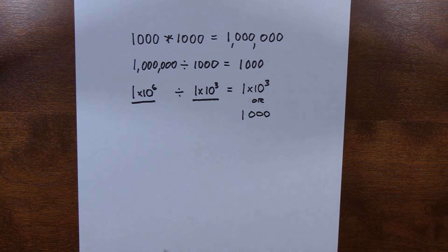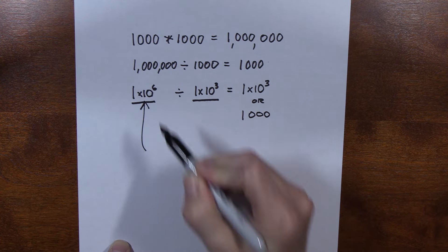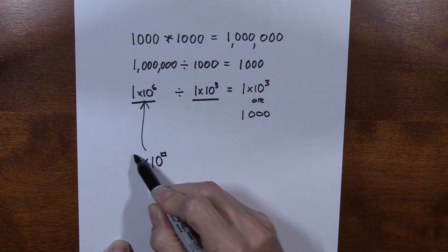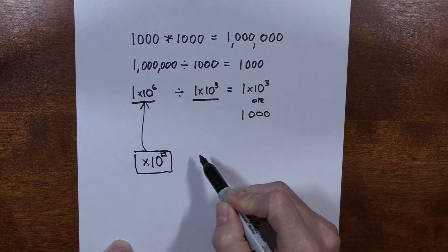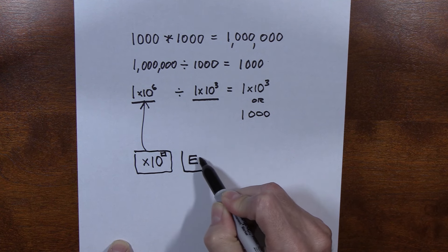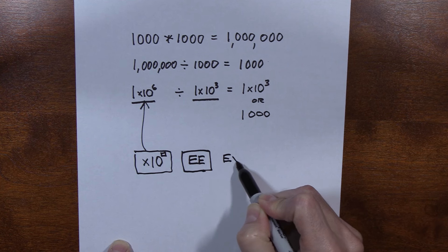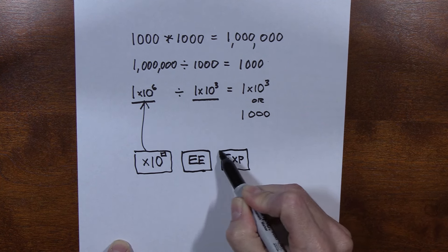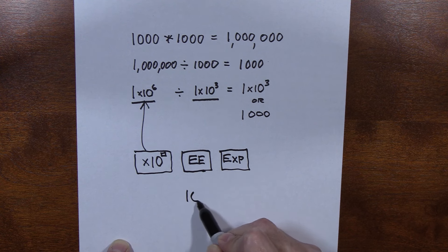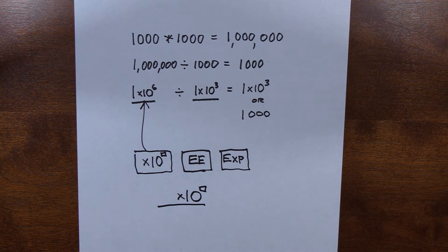One other thing I should mention is on the calculator, sometimes scientific notation is represented by times ten to the, this sort of button. And other times it's represented by an e, actually ee. Other times, like on the Sharp, it is exp. These all are for scientific notation and they all mean times ten to the power. But again, we're talking about a number that is glued together.